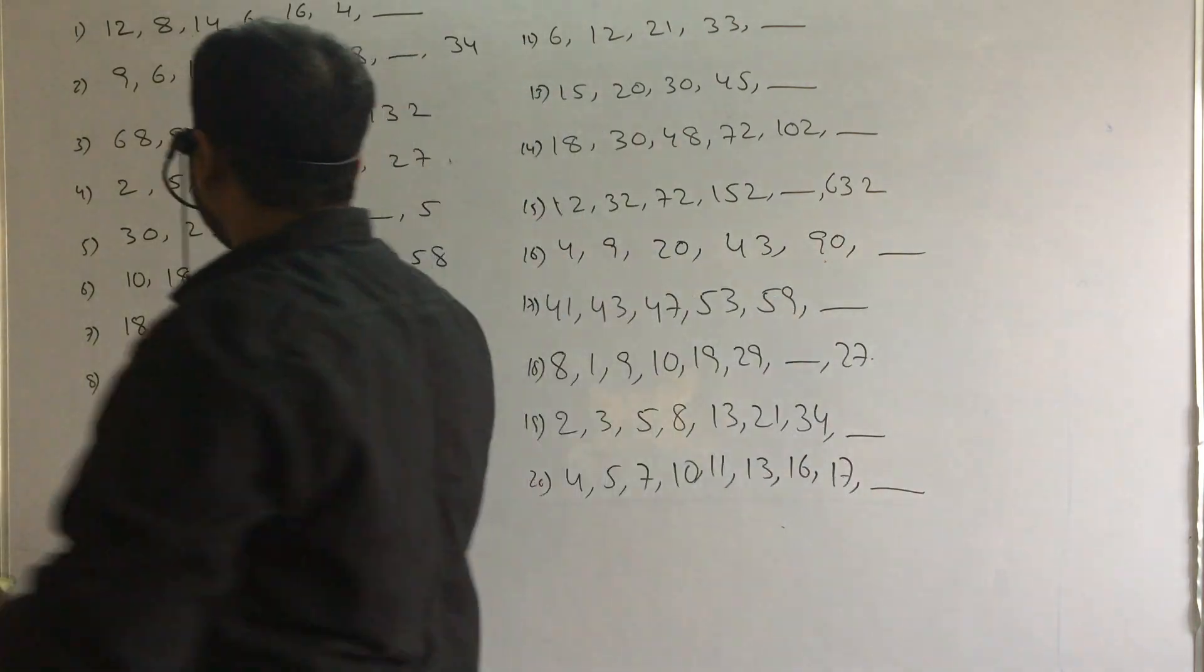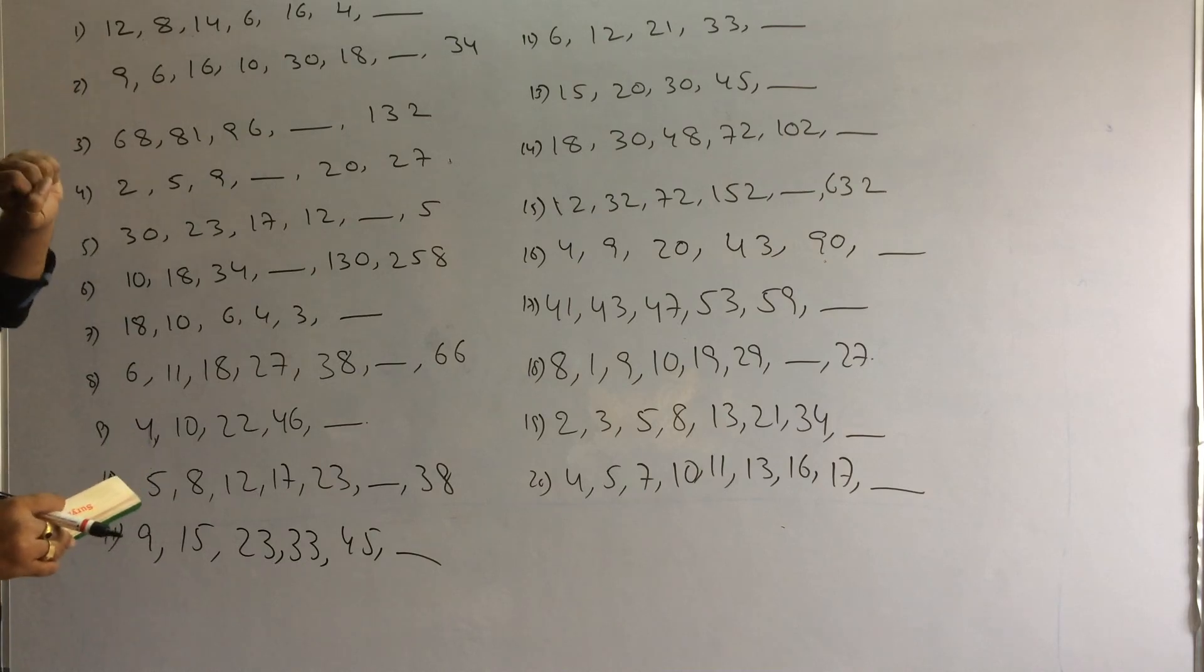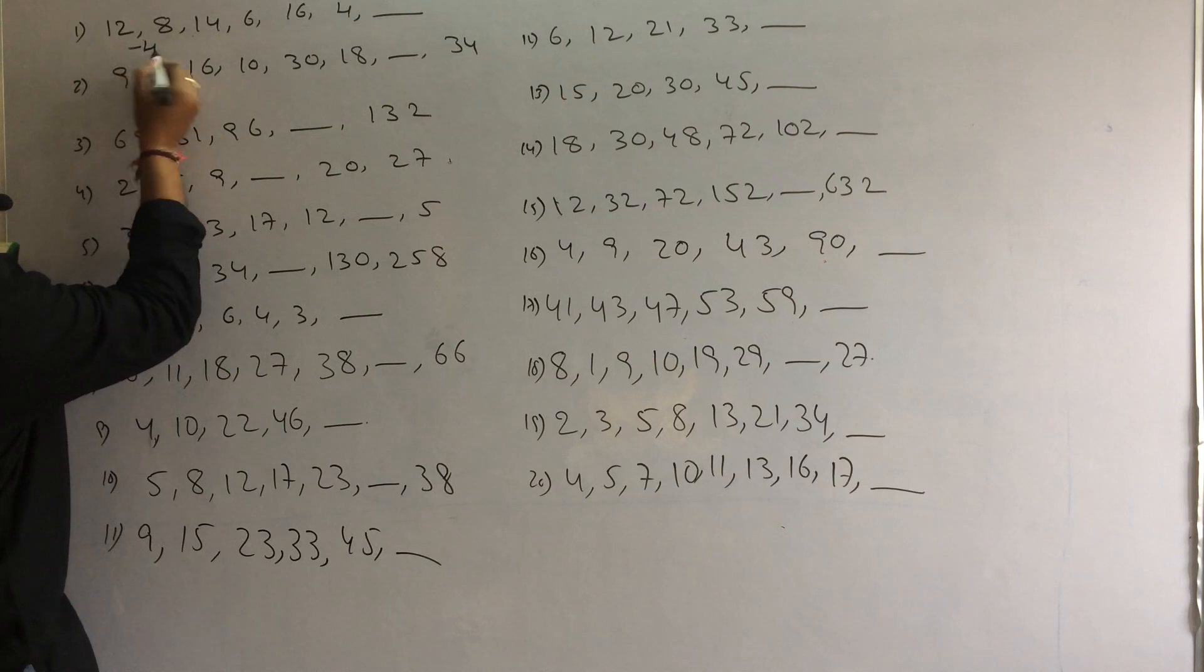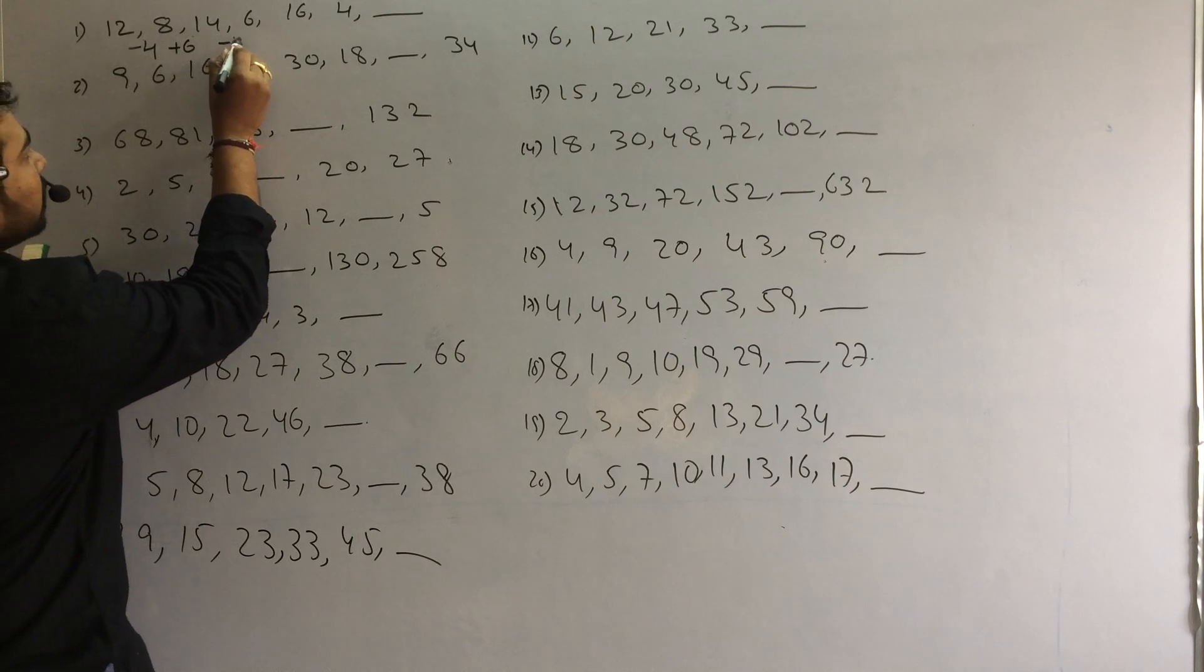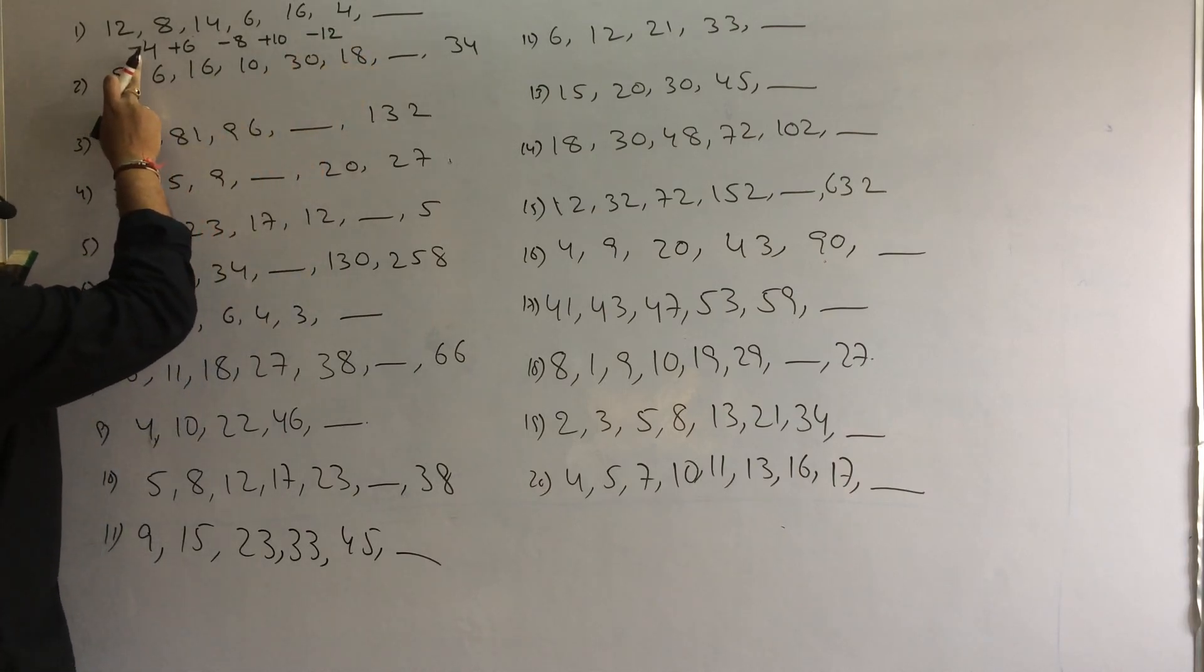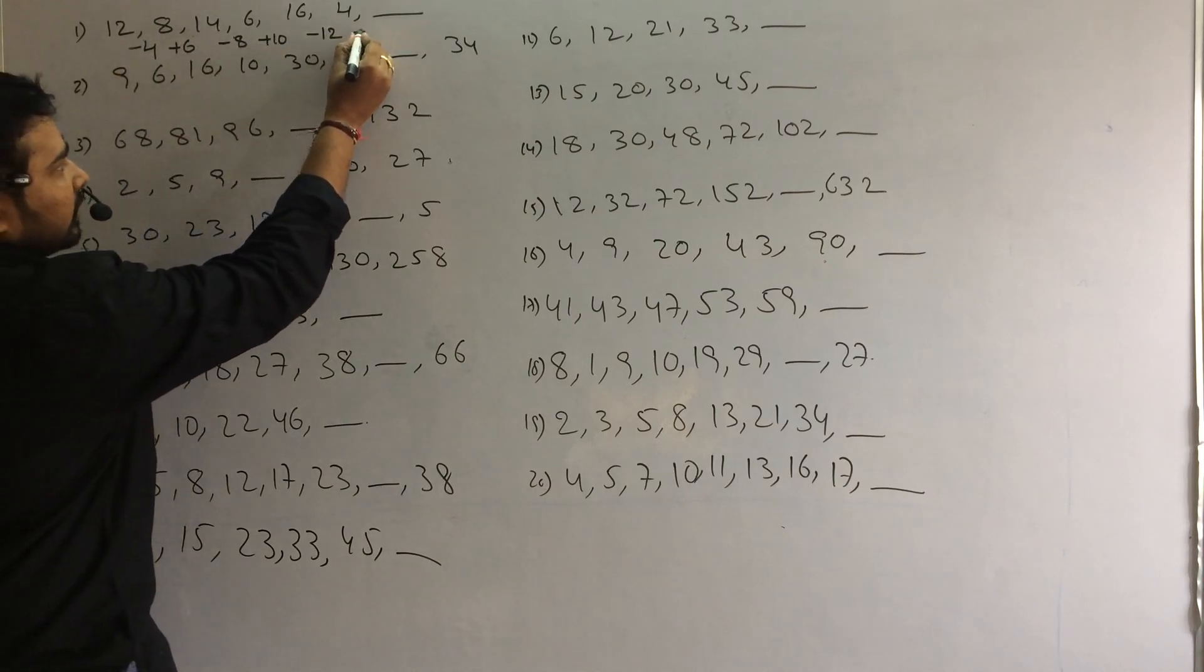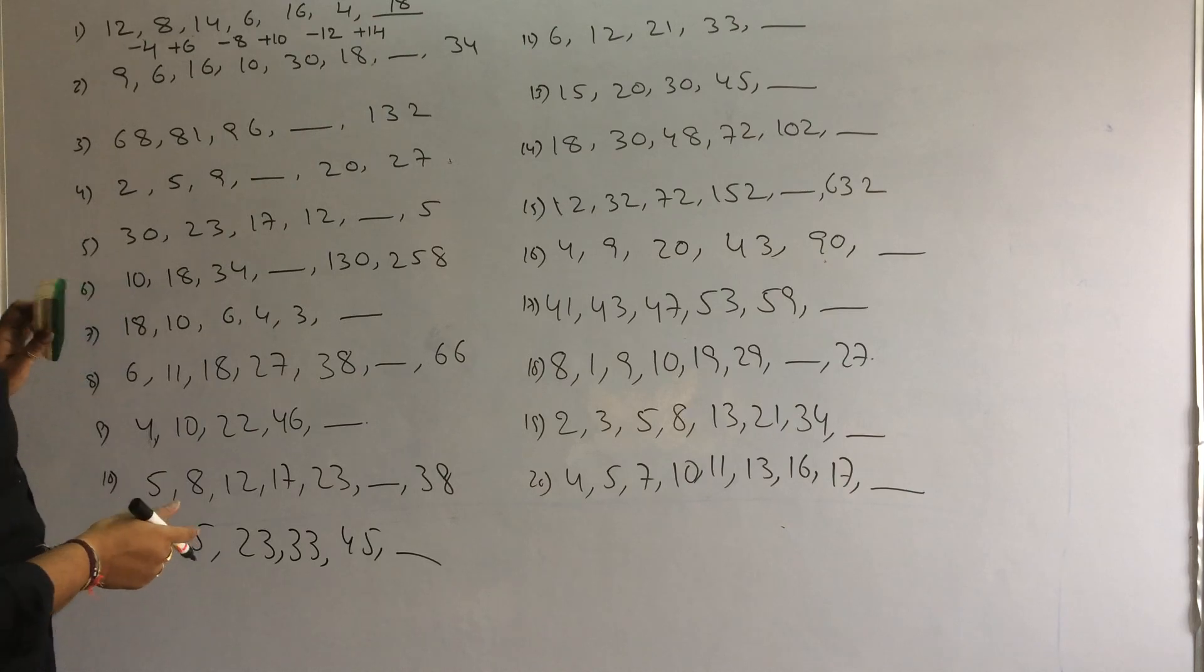First thing I am going to ask is numbers. In these numbers, the difference between them is very normal. Here the difference is minus 4, plus 6, minus 8, plus 10, minus 12. So here the difference is alternately additions and alternately subtractions. What next? Plus 14. If you add 14 to 4, answer is 18. That's your answer.